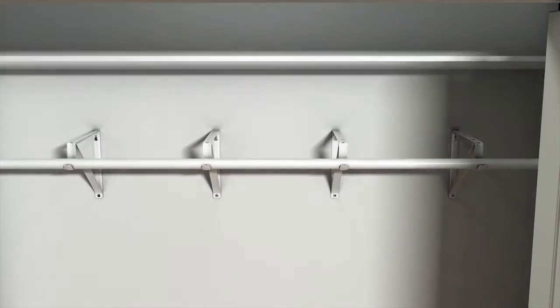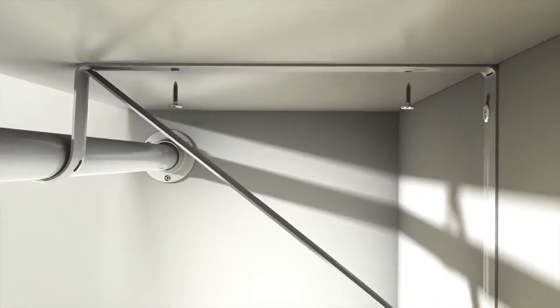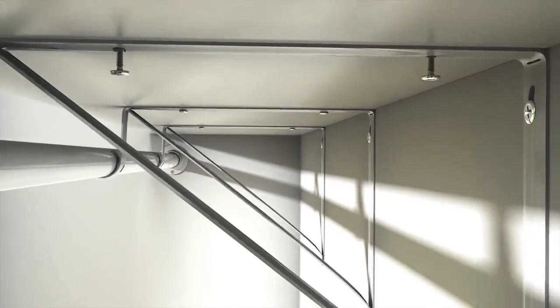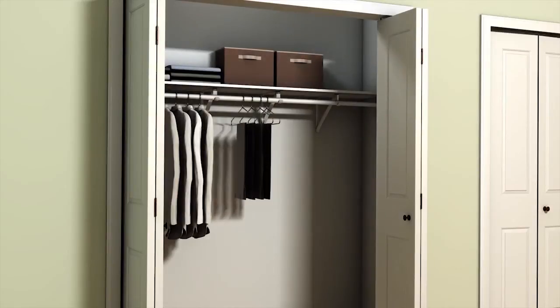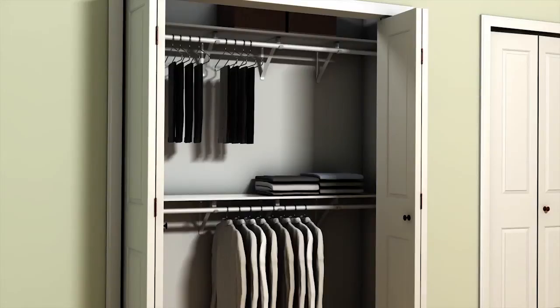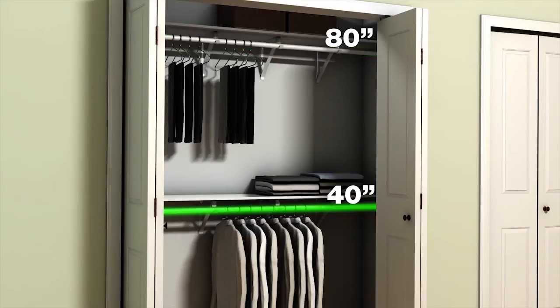Lay the shelf onto the shelf brackets and secure the shelf to the brackets. Your basic closet is finished in three easy steps. To maximize your closet space, you may decide to create a double pole and shelf configuration. The top pole should be 80 inches from the floor and the bottom pole should be 40 inches from the floor.